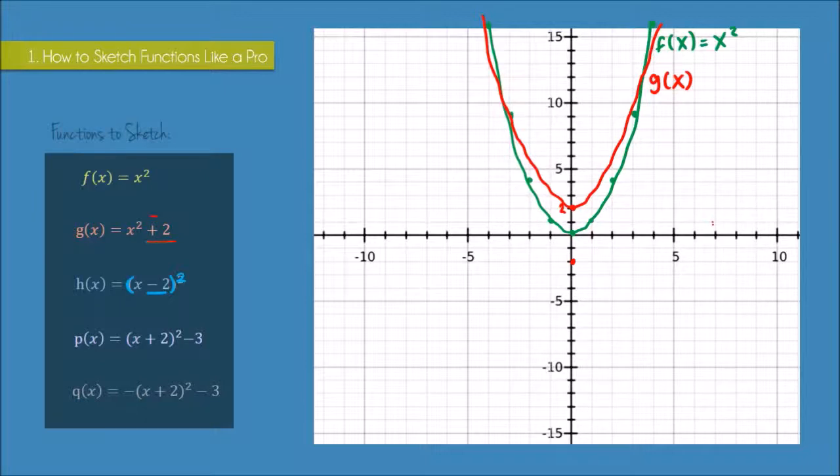So that means I'm taking f(x) and I'm moving it 2 units to the right, so its turning point's going to be here at x = 2, and it should be a similar kind of shape. It's only a sketch anyway, so it doesn't have to be very accurate. Okay, that's h(x).